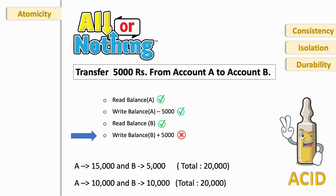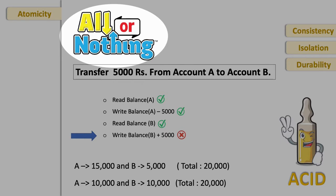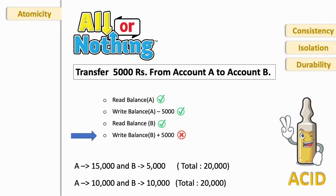Total of A and B's account is not twenty thousand, it is fifteen thousand. The five thousand rupees gone from database, and it should not happen. Atomicity rule says that either all transactions are carried out or none.